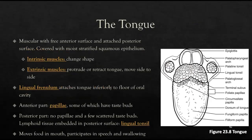The tongue is a very muscular organ with a free anterior surface and is attached posteriorly. It is covered with moist stratified squamous epithelium. The tongue has intrinsic muscles within it that help it change shape — for example, folding your tongue. Extrinsic muscles attach to areas of the neck or chin, allowing the tongue to protrude, retract, and move side to side.